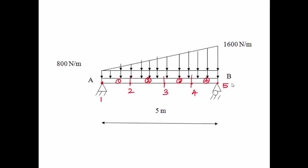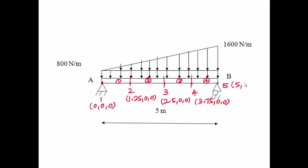The coordinate positions for the nodal points are: node 1 at (0, 0, 0), node 2 at (1.25, 0, 0), node 3 at (2.5, 0, 0), node 4 at (3.75, 0, 0), and node 5 at (5, 0, 0). To apply the uniformly varying load from the ith position to the jth position of each element, we can calculate as follows.